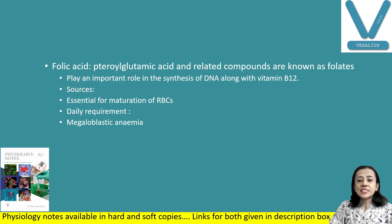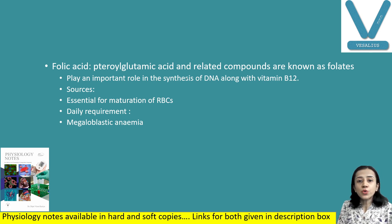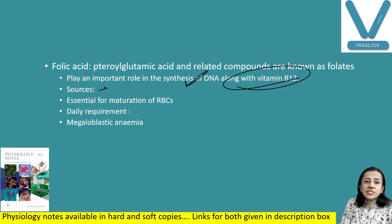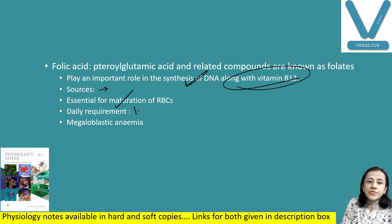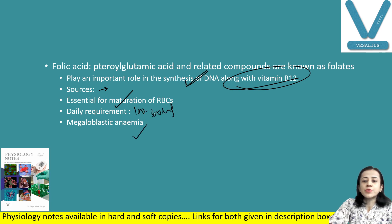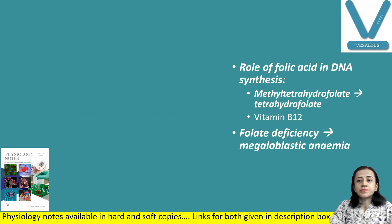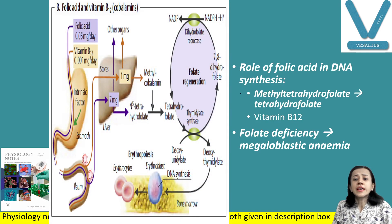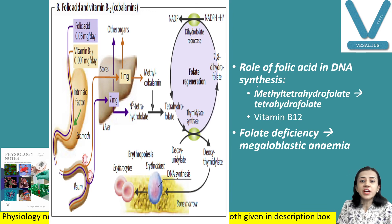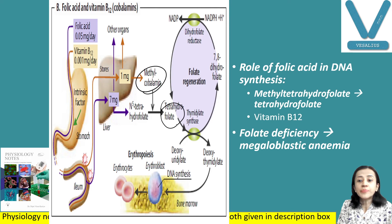Next is folic acid, which is also required for maturation of RBCs. The daily requirement of folic acid is slightly higher — 100 to 300 micrograms — and its deficiency produces megaloblastic anemia. In plasma, folic acid appears as methyl tetrahydrofolate, and vitamin B12 is required for the conversion of methyl tetrahydrofolate to tetrahydrofolate via a methylcobalamin pathway.